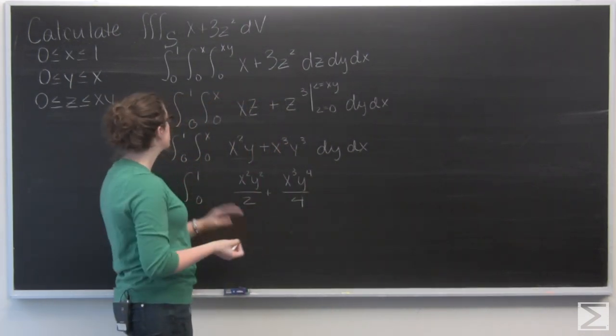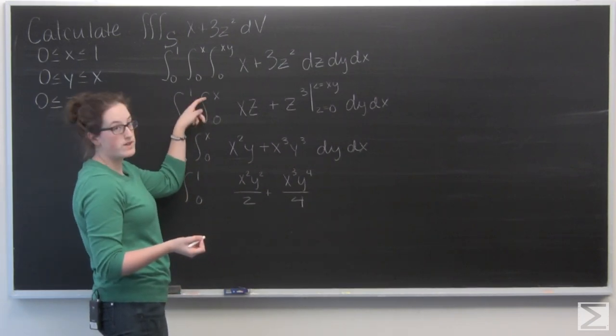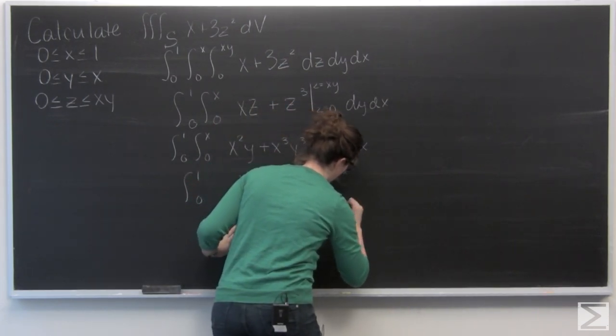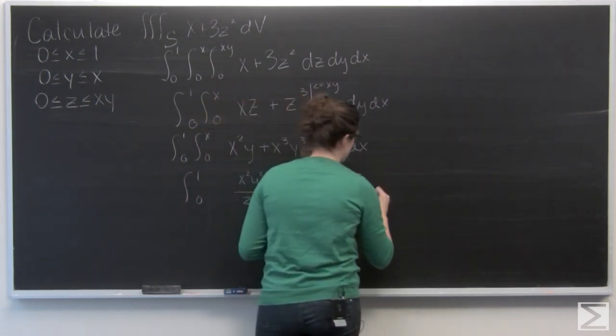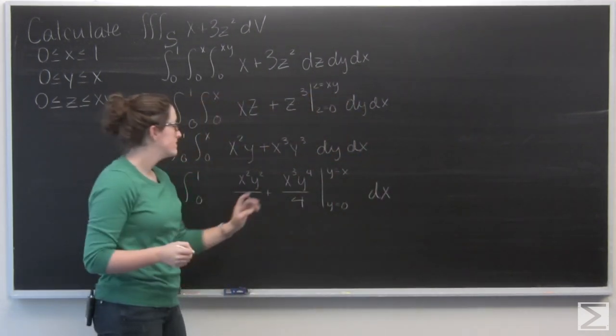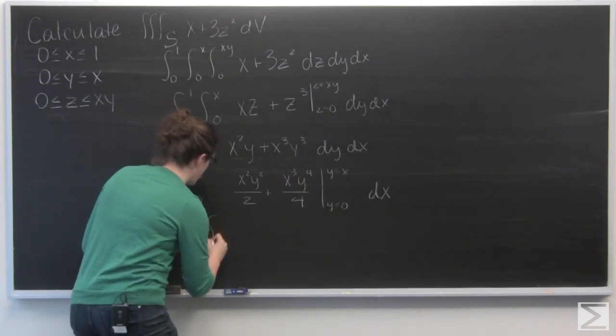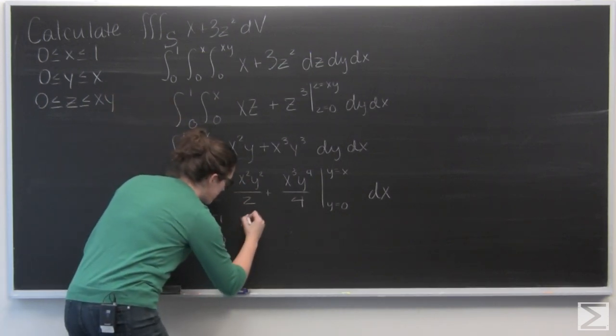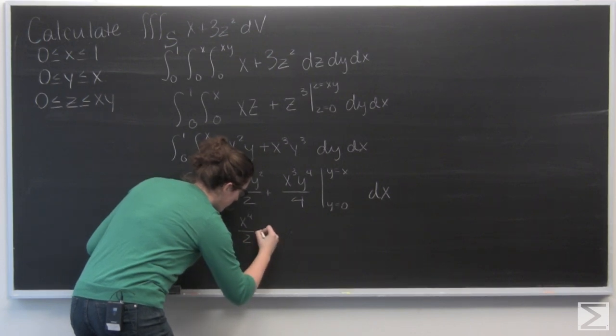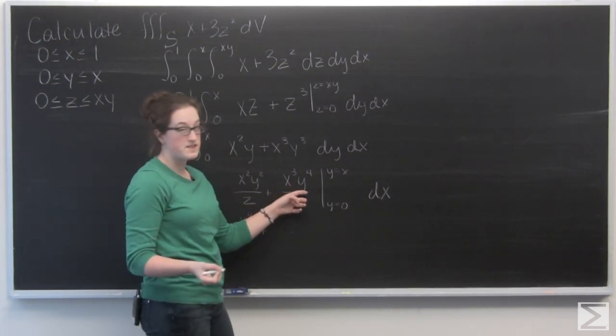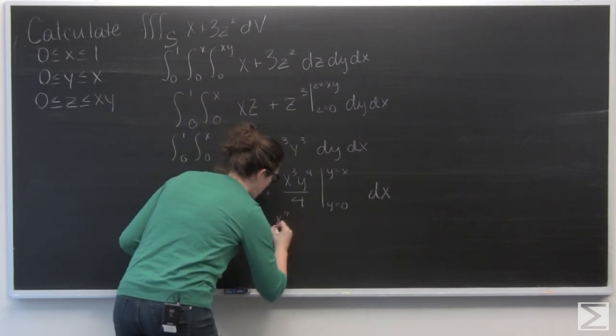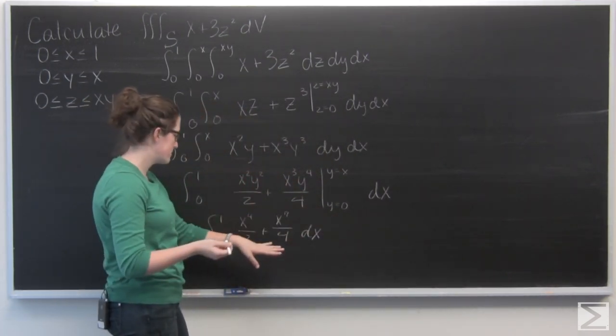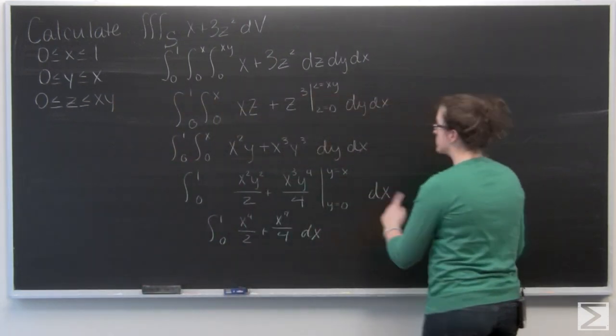So now we're ready to evaluate. Here our bounds are y equals zero to y equals x. I'm just going to write those in. And the dx is still tagging along. Okay. So plug in x everywhere I see a y. So this has become x to the fourth over two. And then x to the seventh over four. The lower bound is zero, so we're not going to have any terms. I'm just going to rewrite this.